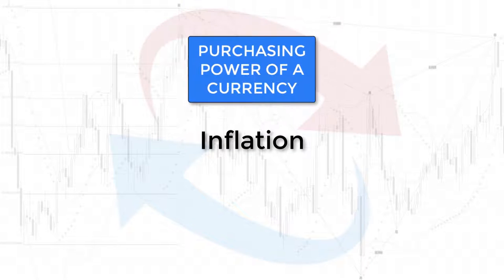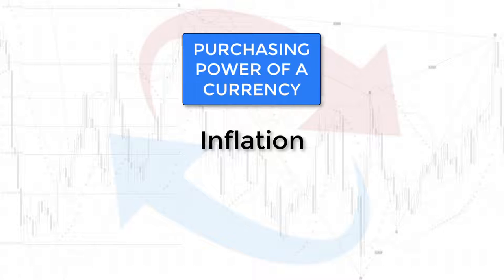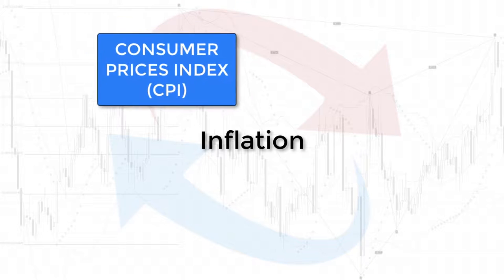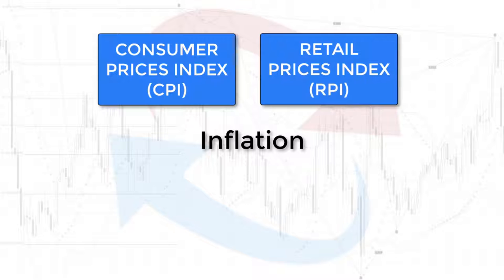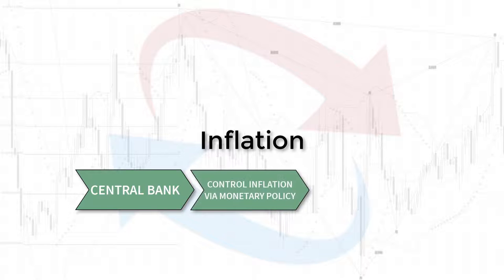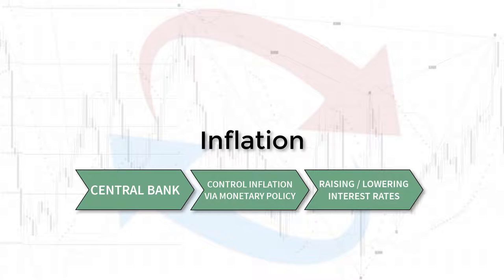Inflation is the purchasing power of a currency reflected as prices for goods and services. The two frequently quoted and most significant measures of inflation are the Consumer Prices Index and the Retail Price Index. A country's central bank is in charge of trying to control inflation via monetary policies. One of the primary tools central banks have to control economic growth and inflation is raising or lowering interest rates.